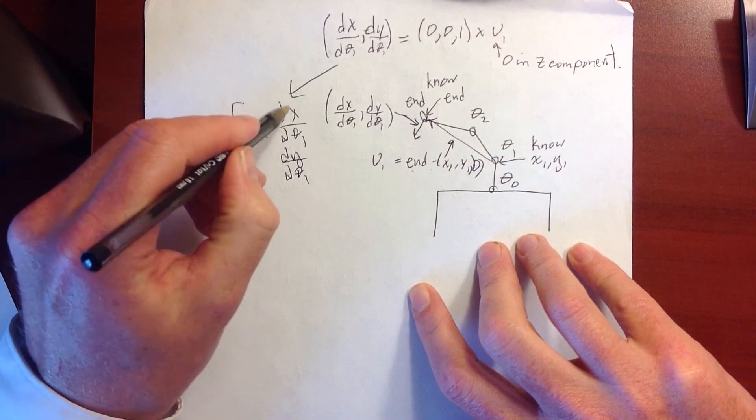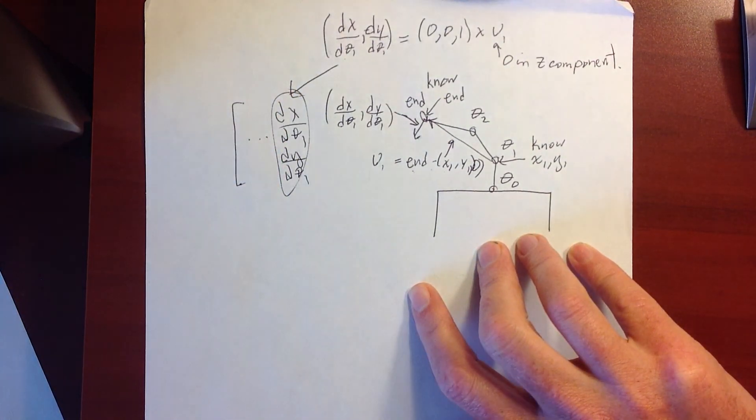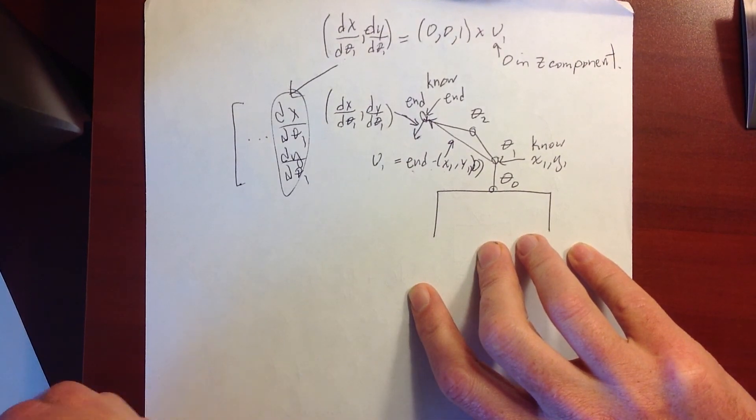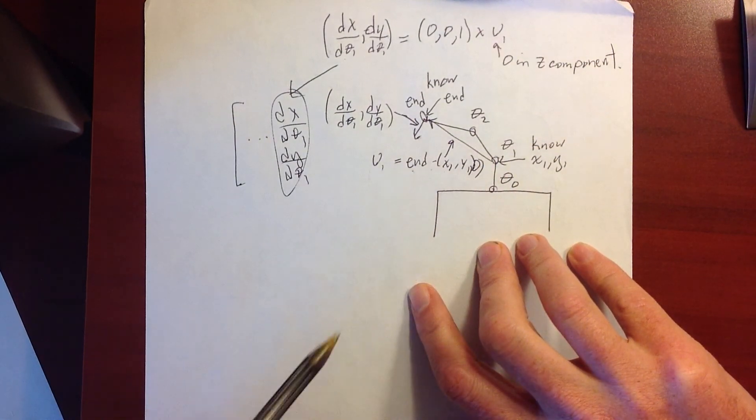And that is how we figure out which way the end effector is going to go, given a small change in the joint angle.